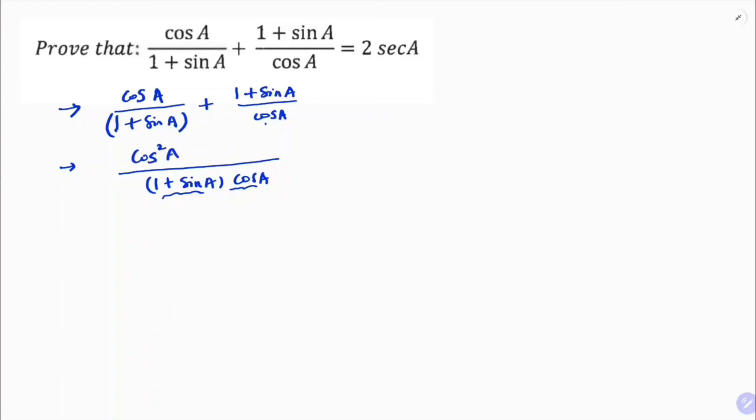Cos square A plus, and here in the denominator, we have cos A, so LCM is 1 plus sin A into cos A, so here I will multiply 1 plus sin A. So 1 plus sin A into 1 plus sin A is 1 plus sin A whole square.